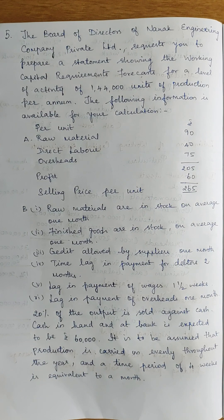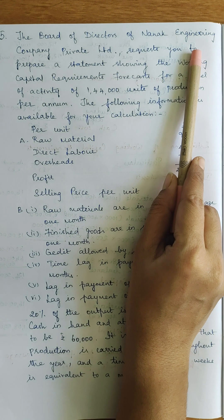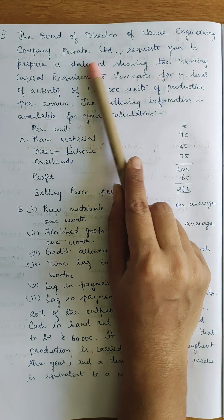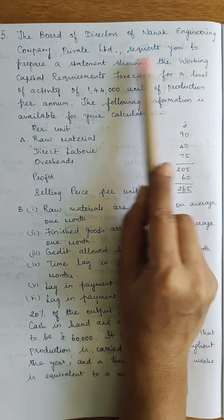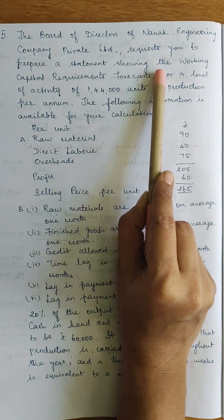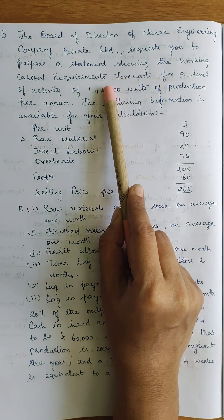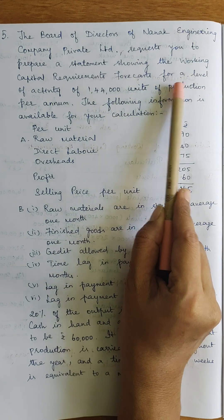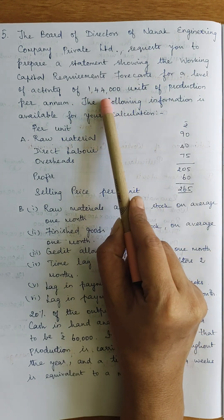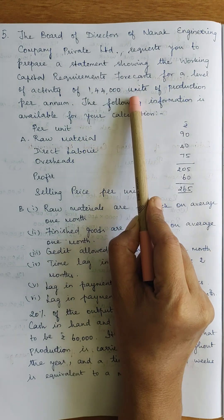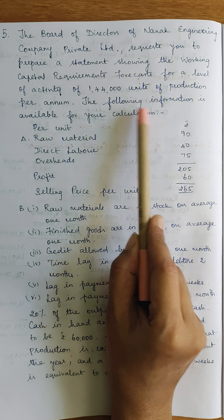Hi, welcome to my channel. In this video, working capital requirement 5th question. The board of directors of Nanak Engineering Company Private Limited request you to prepare a statement showing the working capital requirement forecast for a level of activity of 144,000 units of production per annum.